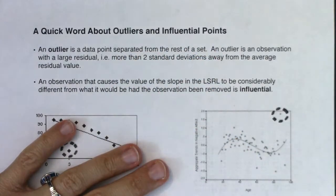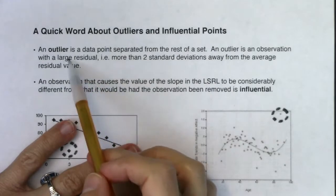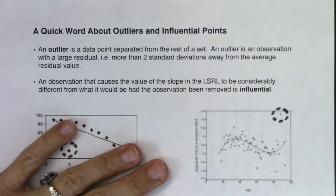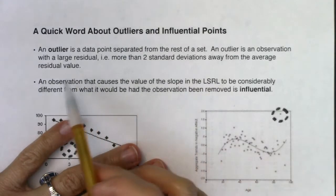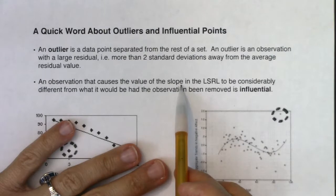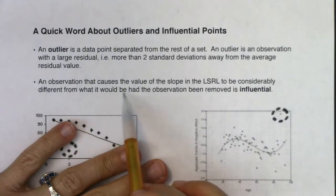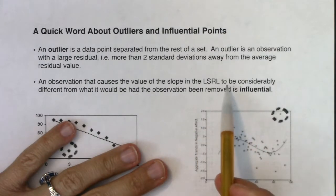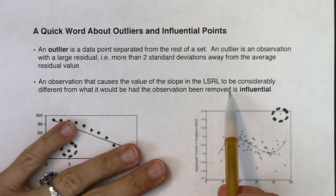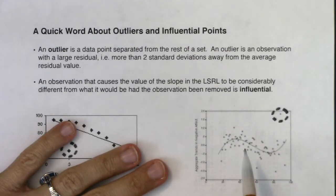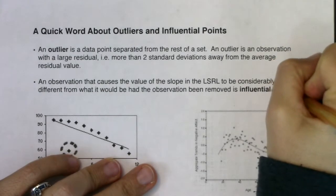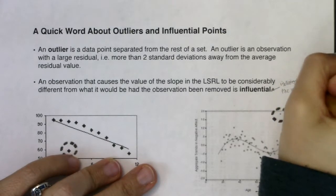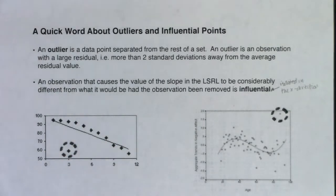An outlier is a data point separated from the rest of the set — an observation with a large residual, defined as more than two standard deviations away from the average residual value. I'll show you how to get this value S, this standard deviation, and we'll double it to identify outliers. An observation that causes the slope of your LSRL to be considerably different from what it would be had that observation been removed is called influential. Influential points are typically isolated in the x direction, whereas outliers tend to be isolated more in the y direction with really large residuals.